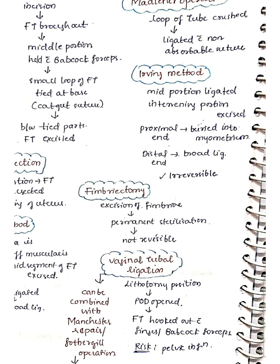In Madlinus operation, a loop of the fallopian tube is crushed and ligated with a non-absorbable suture. In the Irving method, the mid portion is ligated and the intervening portion is excised. The key difference is that the proximal end of the fallopian tube is buried into the myometrium of the uterus, and the distal end is buried into the broad ligament.